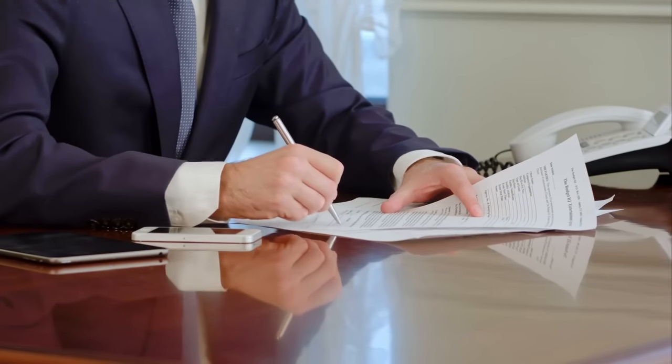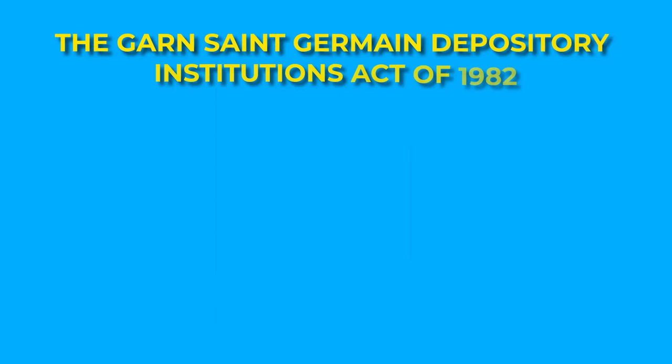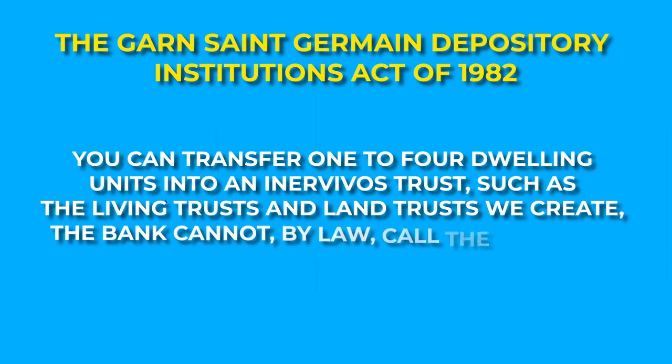A few states require that all deeds be prepared by attorneys, so you may not have self-help options in some cases. Once a deed form is prepared, a real estate deed must be filed in the county where the property is located and you may need to pay a filing fee. A deed transfer into a trust should not affect your mortgage even if it has a due-on-sale clause. In fact, the Garn-St. Germain Depository Institutions Act of 1982 says that you can transfer one to four dwelling units into an inter vivos trust — such as the living trust and land trust that we create.